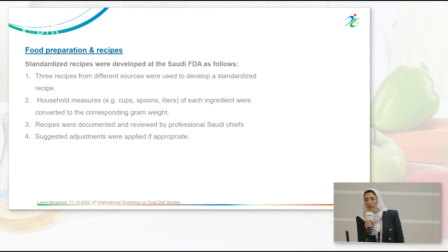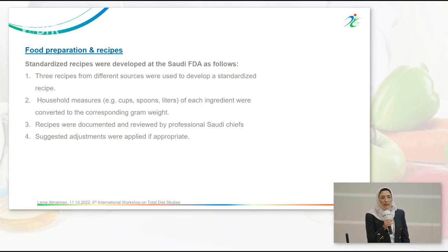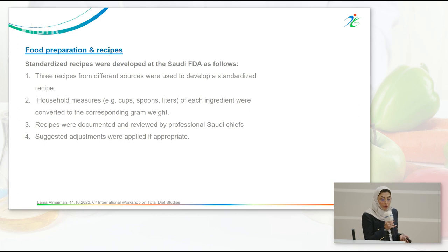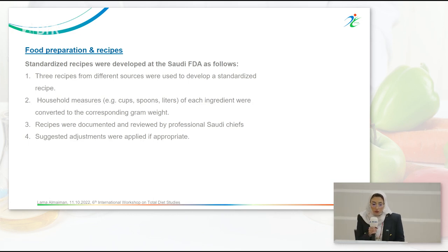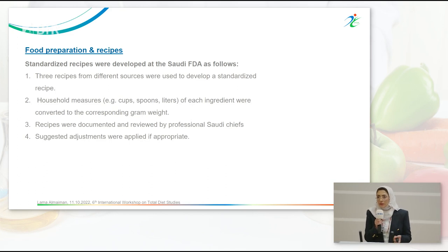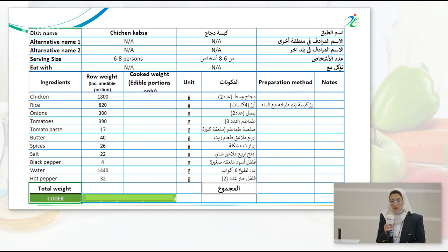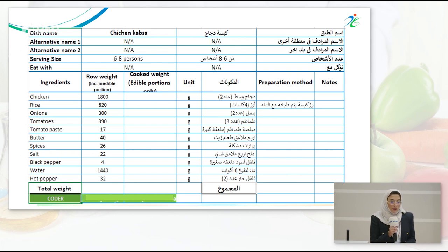For food preparation and recipes, we developed in-house standardized recipes for the food items in the TDS. The recipes were developed using three different sources: cooking books and internet websites. Household measures were converted to corresponding gram weights. All recipes were reviewed by professional Saudi chefs, and adjustments were made where appropriate. This is a screenshot of one of the recipes — it's for chicken kapsa, which is rice with chicken, with directions to the chefs to include all the ingredients.